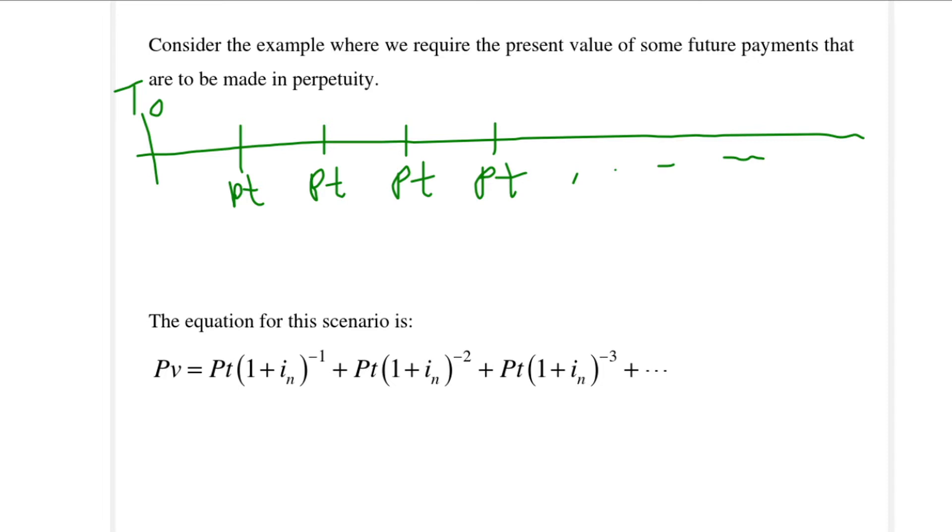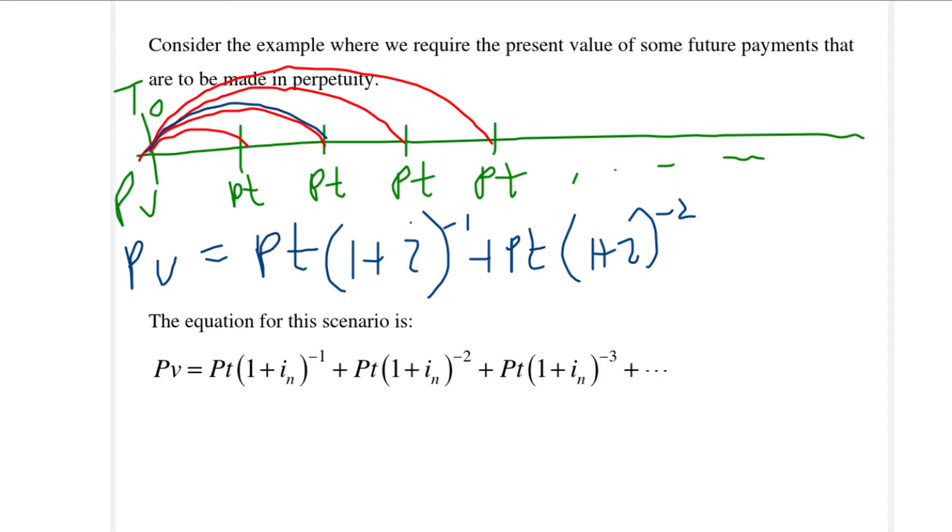To get the present value of this perpetuity we would like to move all these payments to time point T0. So the present value will be the first payment and then to move it back one time period it's 1 plus I to the minus 1. Then for the second payment I move it back two time periods and then the third one is my payment and I move it back three time periods and it will continue like that. You can recognize this again as a geometric series.